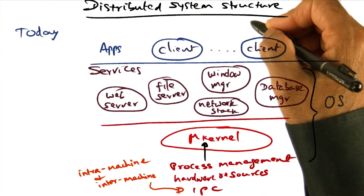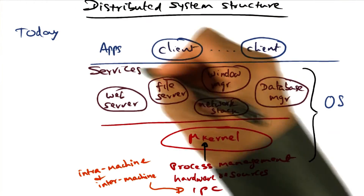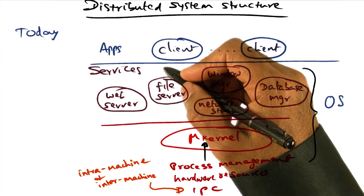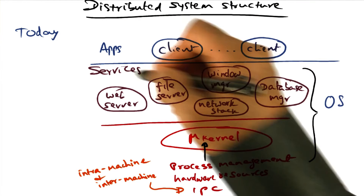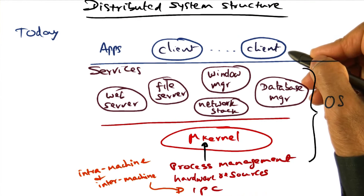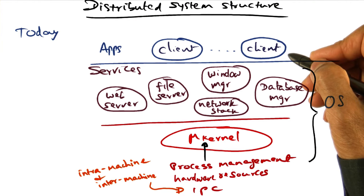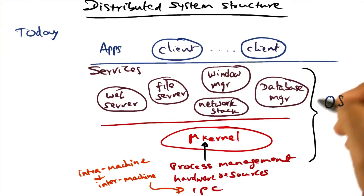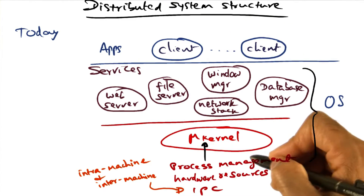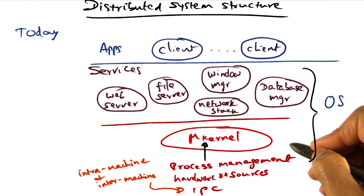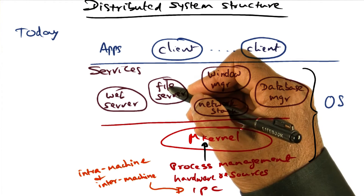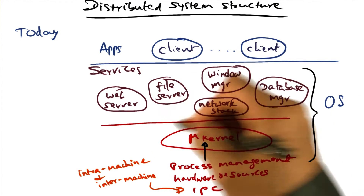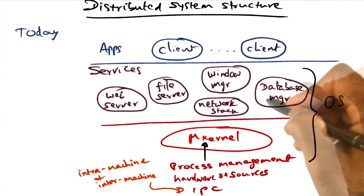If you look at the structure of distributed systems today, what you'll see is there are applications and applications that users use. And there are system services and there is a microkernel sitting at the bottom. And the system services include things like file server, web server, window manager,